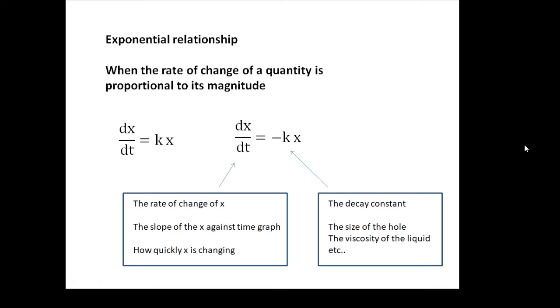k is a constant. And I'm calling it the decay constant. That will depend on the size of the hole and the viscosity of the liquid, and perhaps one or two other things as well. But it's the constant in the equation. We call it the decay constant.